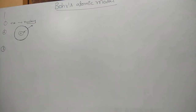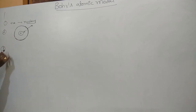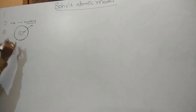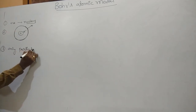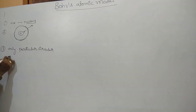These two postulates are directly taken by Bohr from Rutherford's model. Now the third point introduced by Bohr states that electrons will not revolve in all circular orbits — they will exist only in particular circular orbits.